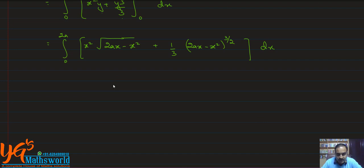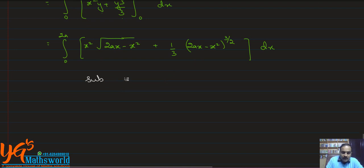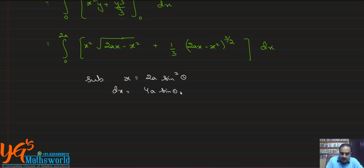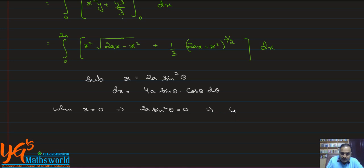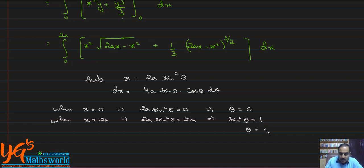We substitute x = 2a sin²θ, so that dx = 4a sinθ cosθ dθ. For the limits: when x = 0, sin²θ = 0, so θ = 0. When x = 2a, 2a sin²θ = 2a, so sin²θ = 1, giving θ = π/2. The limits transform from 0 to π/2.